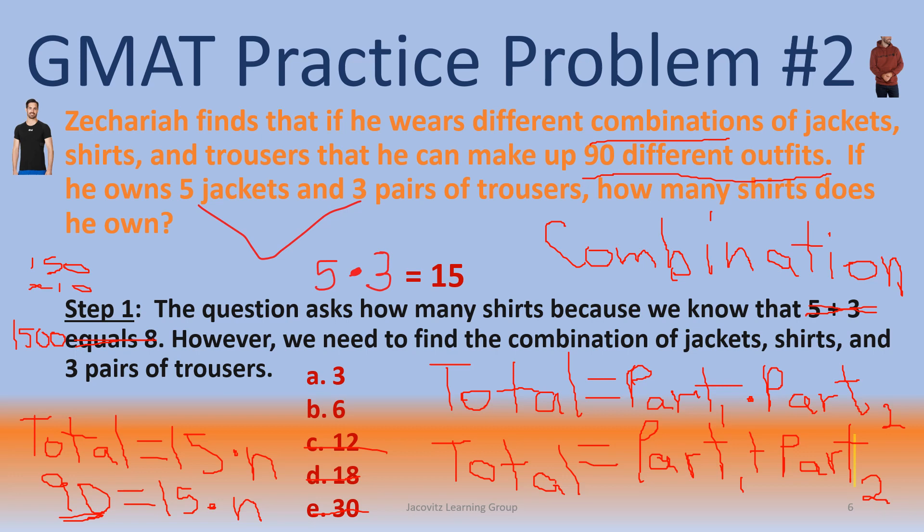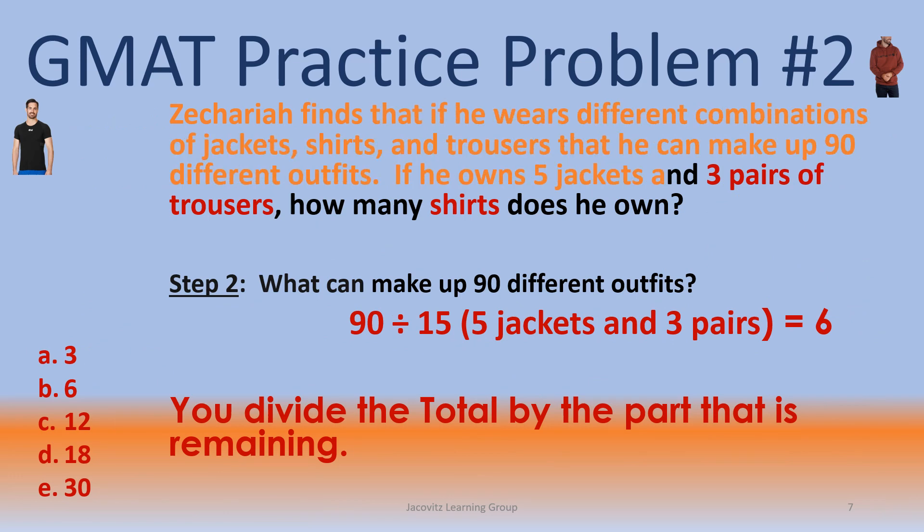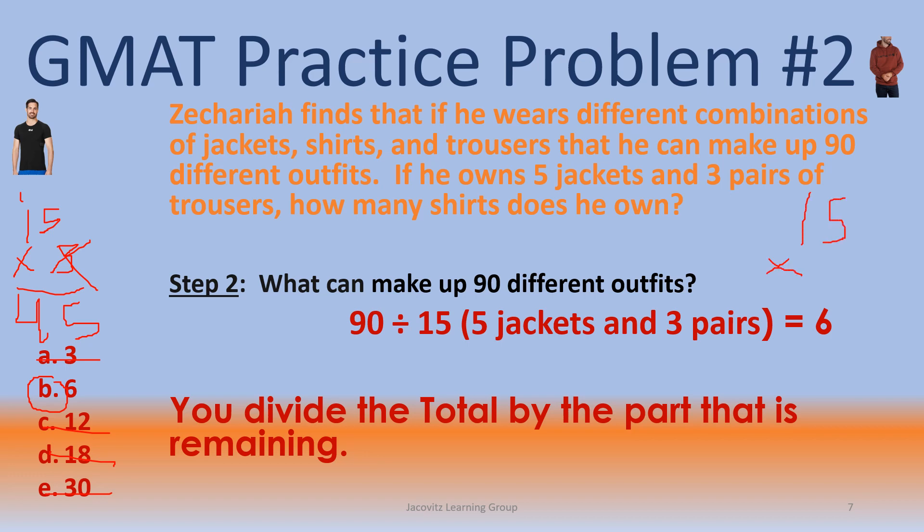So let's go on to the next slide. What can make up ninety different outfits? That's the question and here's how you know for sure you're gonna just divide it out. If you try to do fifteen times three you're going to get forty-five. So three cannot be the answer. We already ruled out twelve and eighteen so quite frankly six is your answer but if you keep multiplying you know fifteen times four is sixty and fifteen times five is seventy-five.